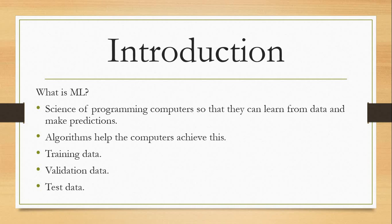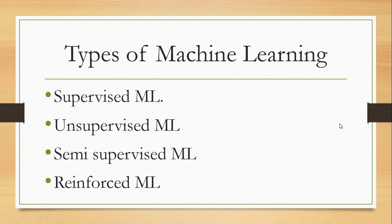There are different types of machine learning algorithms: supervised algorithms, unsupervised, semi-supervised, and reinforced learning algorithms, among many others such as federated learning. In this series I'm going to focus mainly on supervised and unsupervised, and we'll also look at semi-supervised.